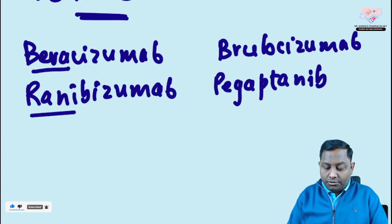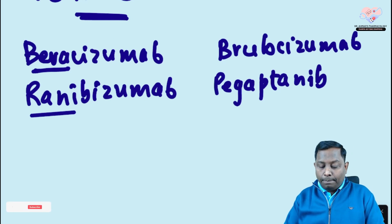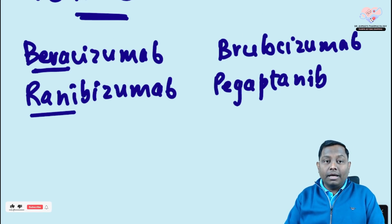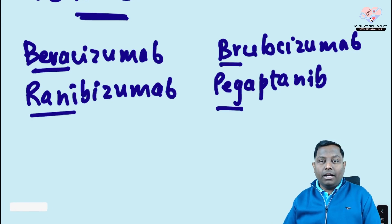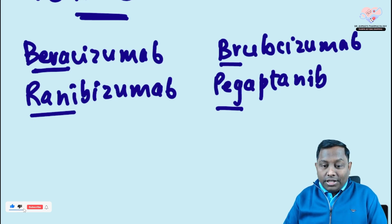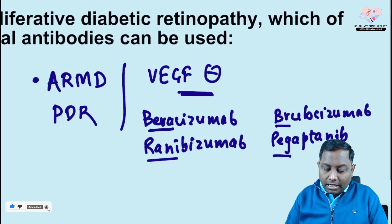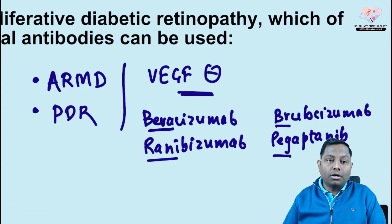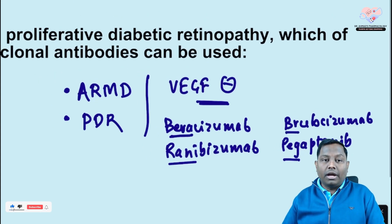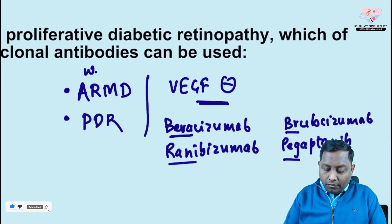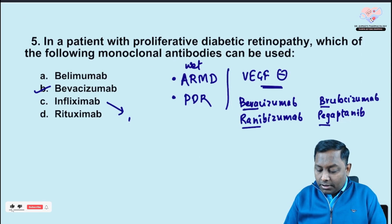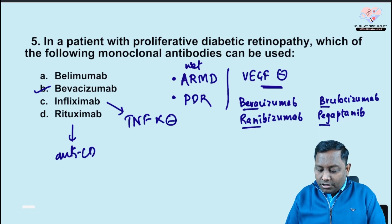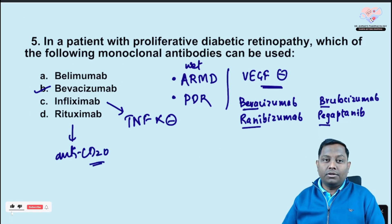These VEGF inhibitors can be utilized in age-related macular degeneration (wet type) and proliferative diabetic retinopathy. Infliximab is a TNF-alpha inhibitor. Rituximab is an anti-CD20 agent — an all-time examiner favorite. Please don't forget the rituximab story already shared.